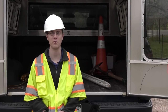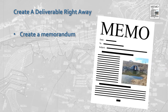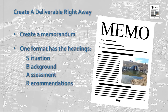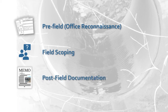Welcome back to the office. You can make the most out of the pre-field and field work you've done by creating a deliverable right away about the problem you encountered. One state DOT uses a memo format called SBAR, which allows for a concise report of the problem, what your pre-field and field investigation revealed, and what you recommend as next steps. You can use this type of memo or whatever format your agency currently uses. Be sure to use enough photos, measurements, and graphics to make your points clearly. Remember, any drainage maintenance issue should include pre-field office reconnaissance, field scoping, and post-field documentation. Thank you for watching this video!